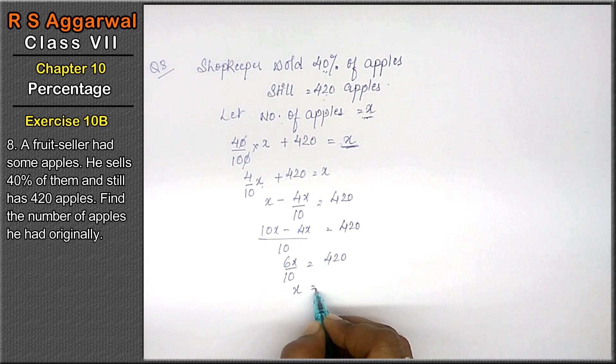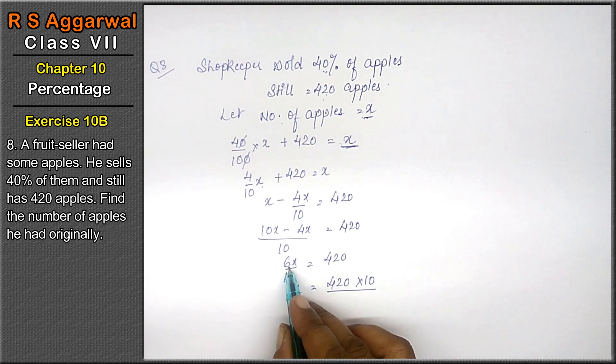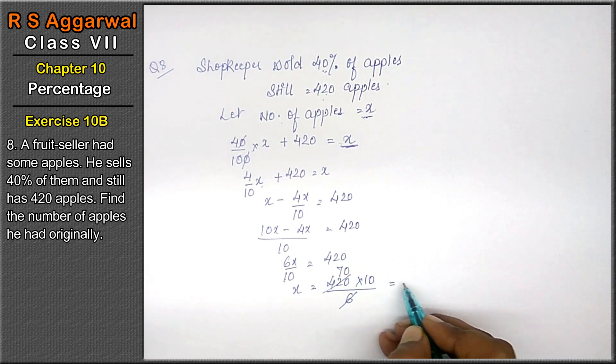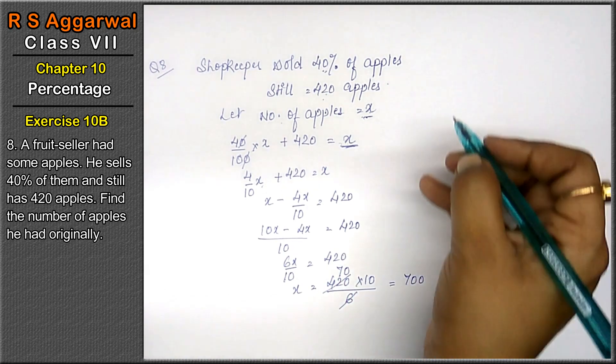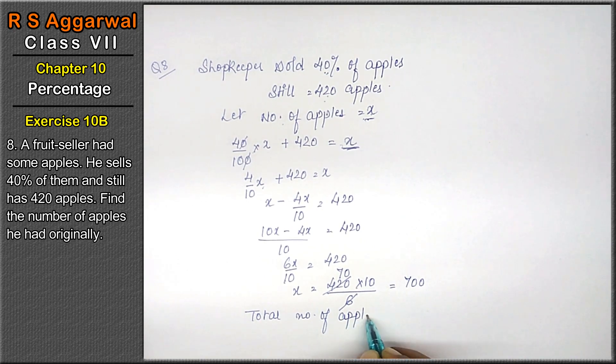x as it is, 420. The denominator will be multiplied in the numerator. 6 times 7 is 42. That means 700. So total number of apples is 700.